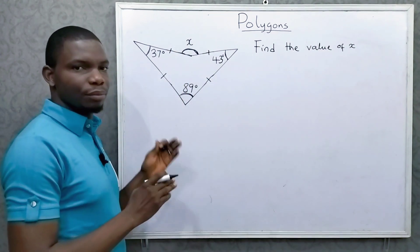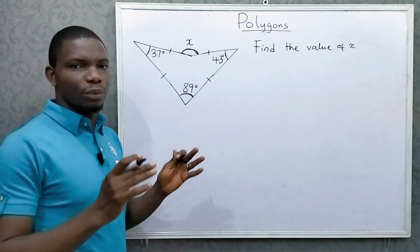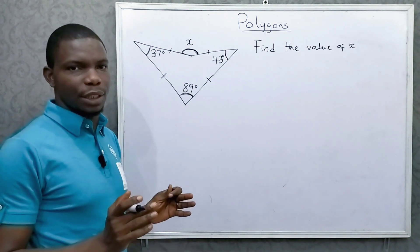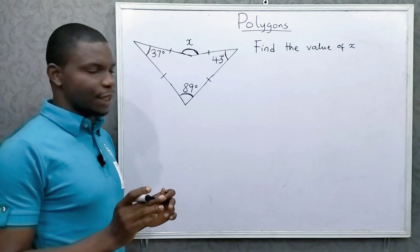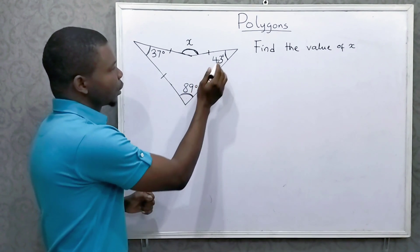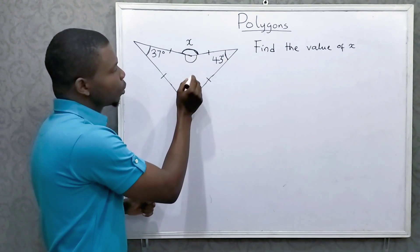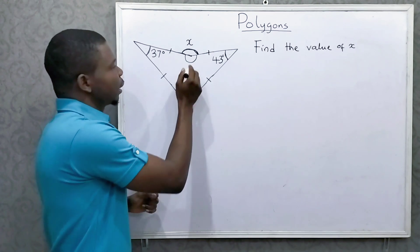So this means we have a quadrilateral, right? And you know the sum of angles in a quadrilateral is equal to 360. What that means is if I add this to this to this and then this side, this angle, I should get 360.